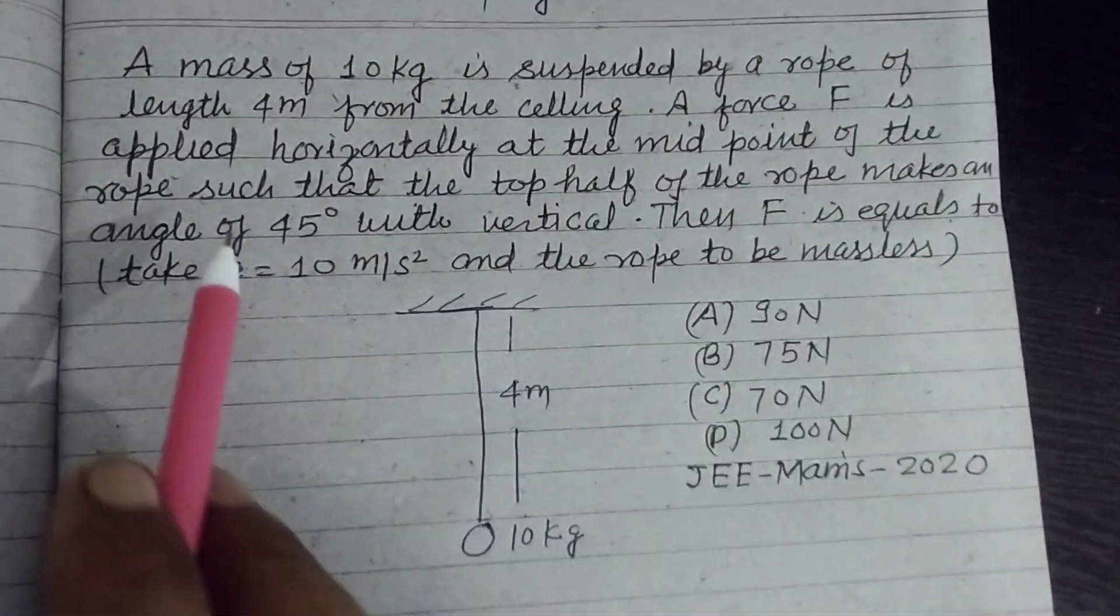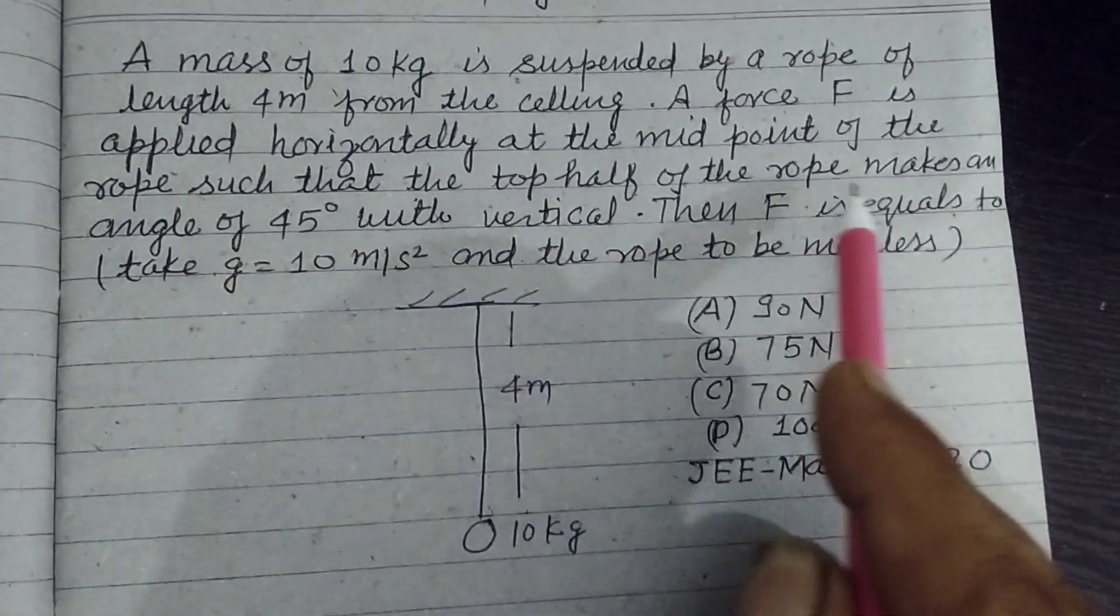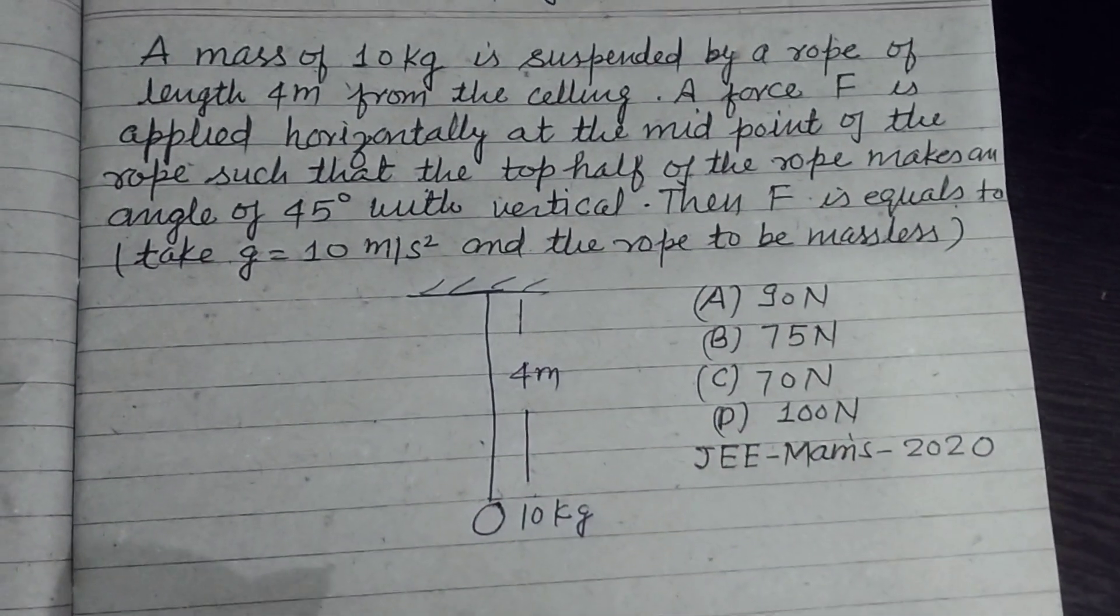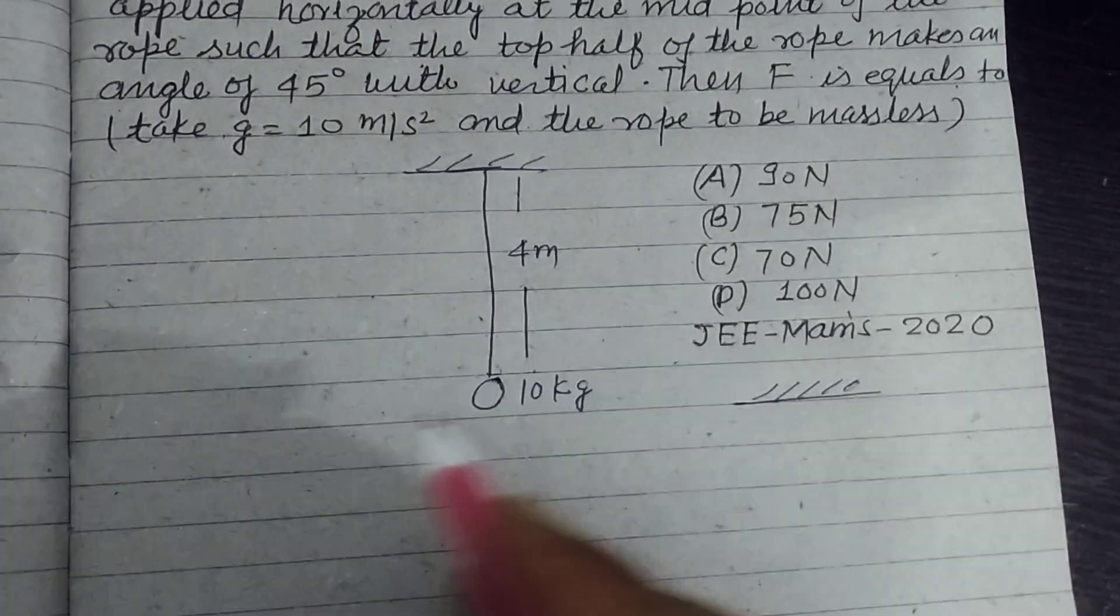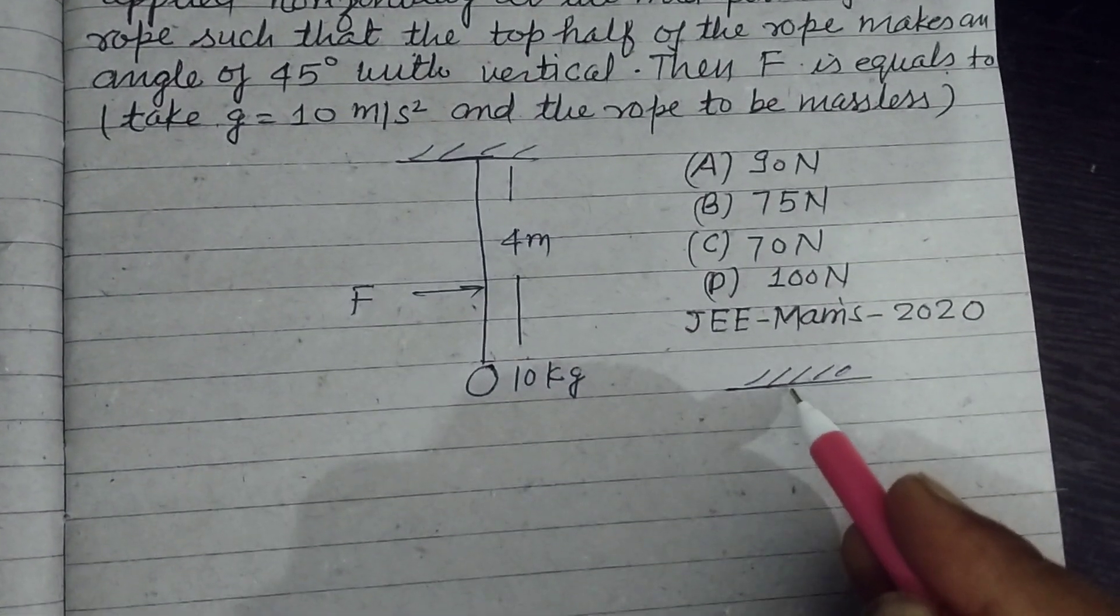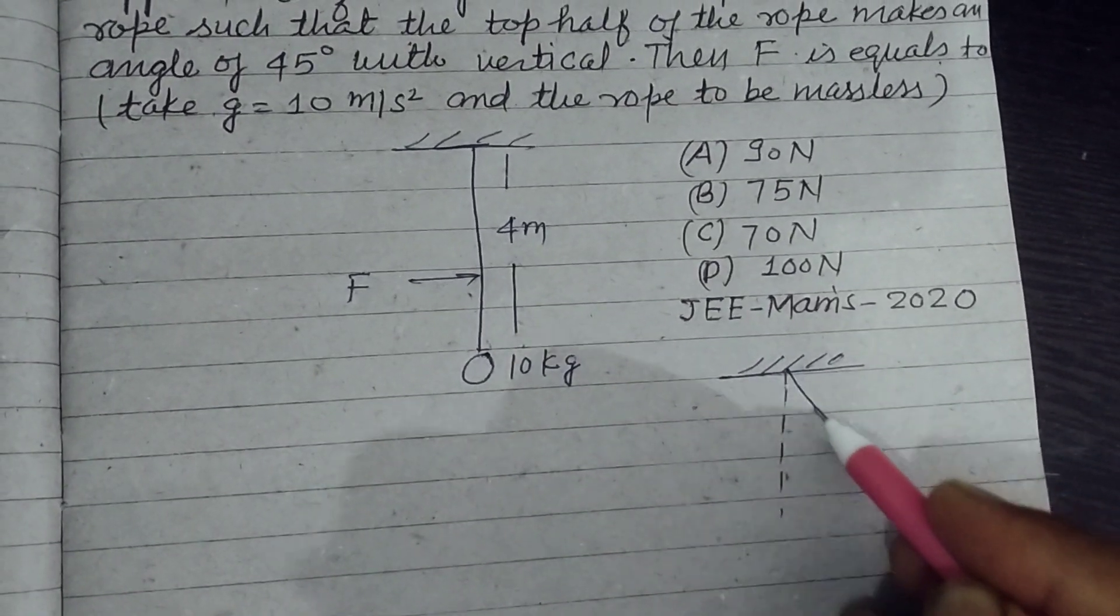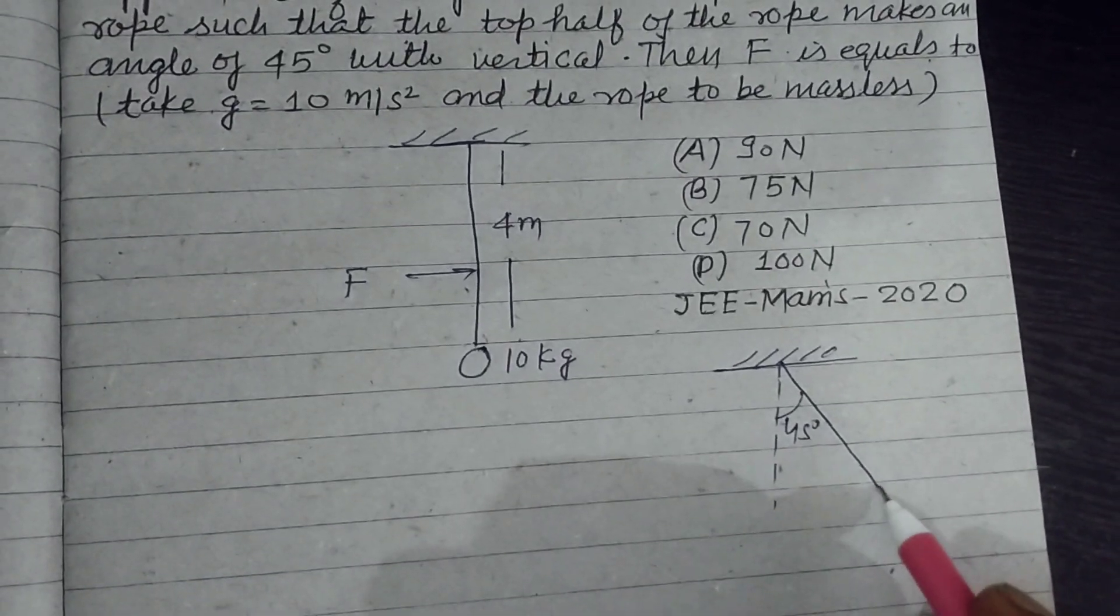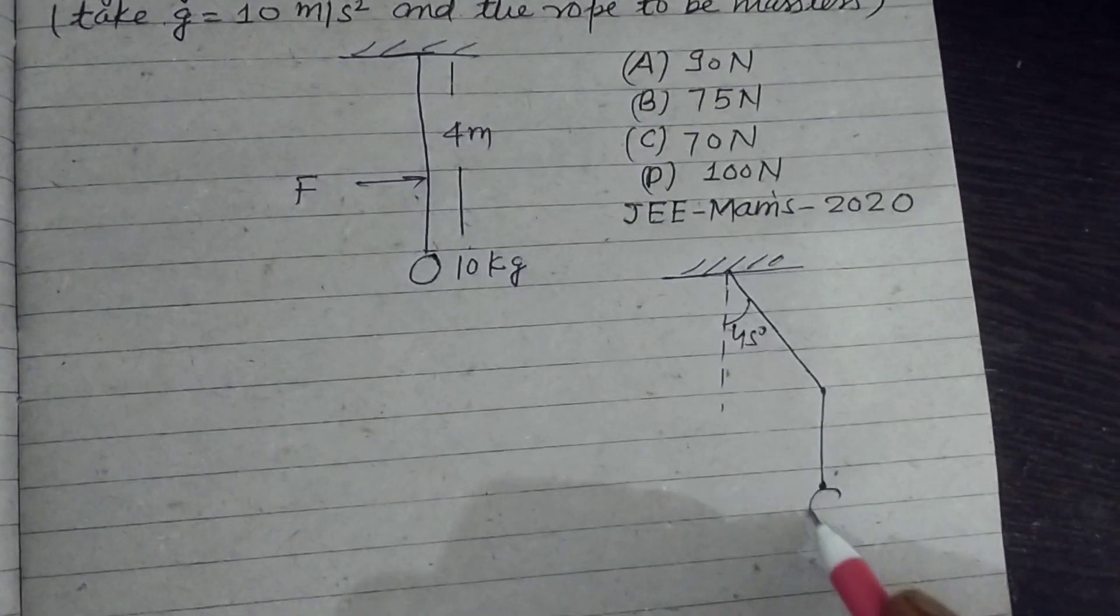A force F is applied horizontally at the midpoint of the rope such that the top half of the rope makes an angle of 45° with the vertical. So when the force is applied at the mid of this rope, the rope becomes in such direction that it makes an angle of 45° with vertical and its half part hangs here with mass 10 kg or 10G.